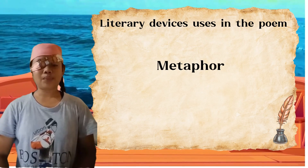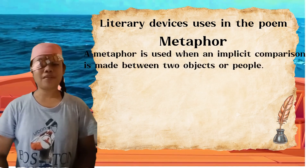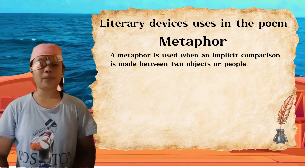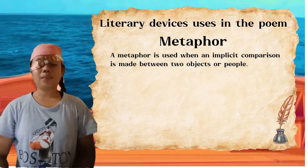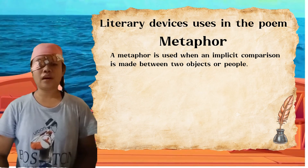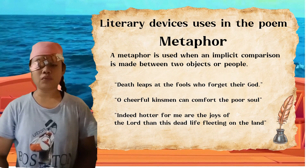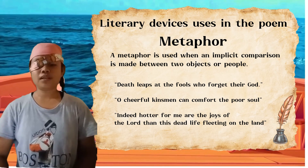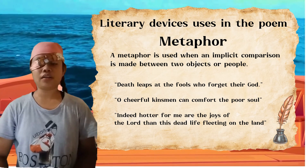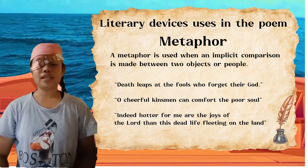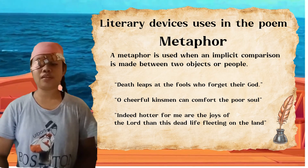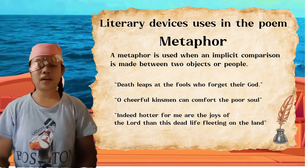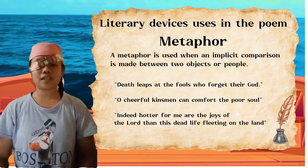First: Metaphor. When an implicit comparison is shown between two objects or persons, it is called a metaphor. For example, in the poem, the metaphor employed is 'lips of the fools who forget their God.' The author believes that on the day of judgment, God holds everything accountable. He says that those who forget Him should fear His judgment. The line serves as a reminder to worship God and face His wrath.